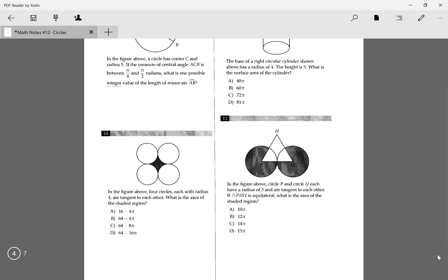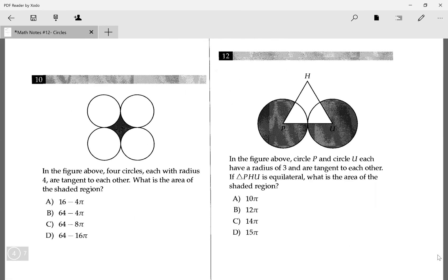The other one to go over is number 10. This one seems complicated, but it's not really. In the figure above, four circles each with a radius of 4 are tangent to each other. What is the area of the shaded region? So we can draw a square right here because they're all tangent, and the shaded region is from the tangent. This doesn't look exactly like a square, but you know what I'm talking about. And if the radius is 4, then that means this is 4, 4, 4, 4, 4, 4, 4, 4.